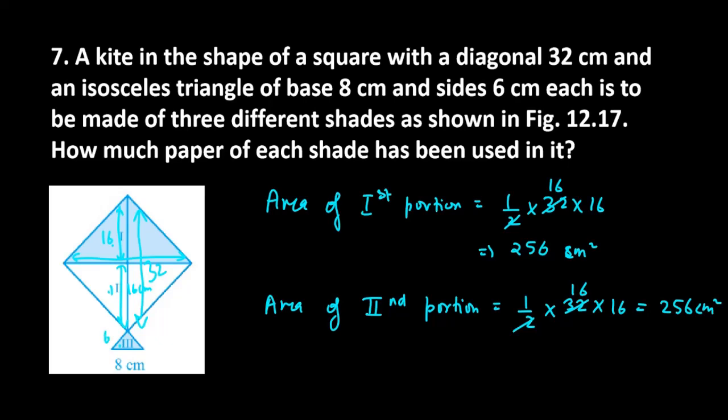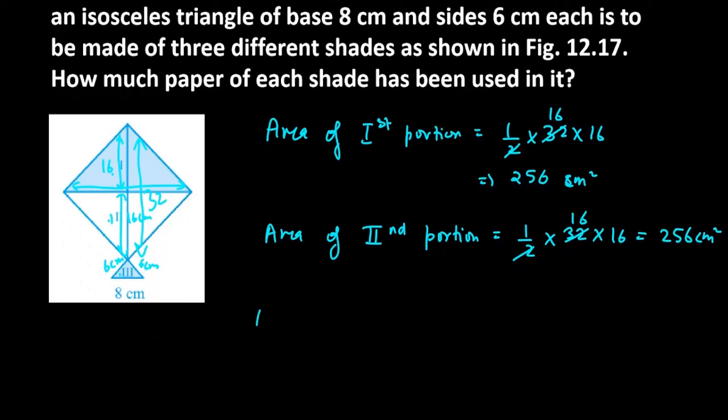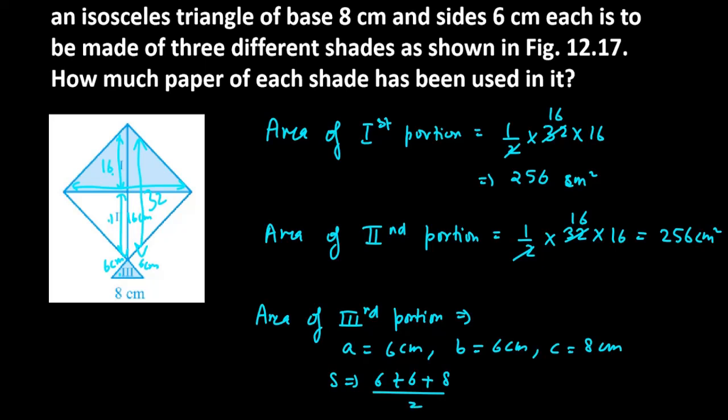The third portion is an isosceles triangle with sides 6 cm, 6 cm, and base 8 cm. For the semi-perimeter: 6 plus 6 plus 8 is 20, divided by 2 gives you 10 cm.